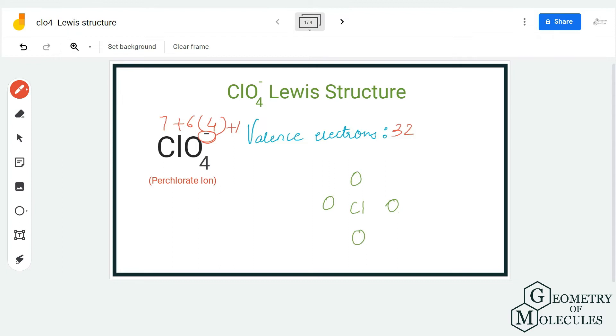So in total we have 32 valence electrons. Your chlorine will take the central position and all the oxygen atoms will be arranged around it like this. To show a bond, you can either place a pair of electrons or show a bond by using a straight line. Remember, each bond uses up two valence electrons.